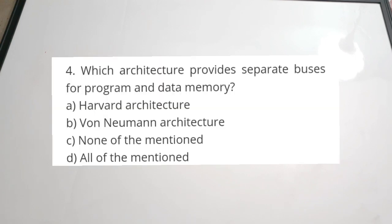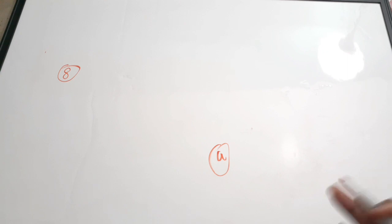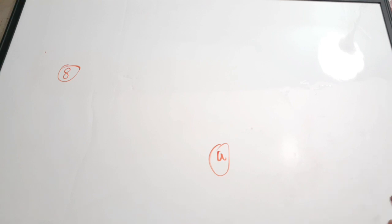Eighth question: which architecture provides separate buses for program and data memory? A) Harvard architecture, B) Von Neumann architecture, C) none of the mentioned, D) all of the mentioned. The correct answer is A, Harvard architecture. In Harvard architecture there are separate bases for program memory and data memory, allowing the processor to access both simultaneously with no congestion.